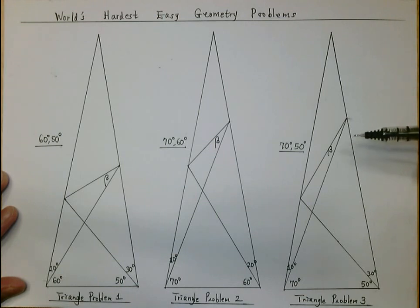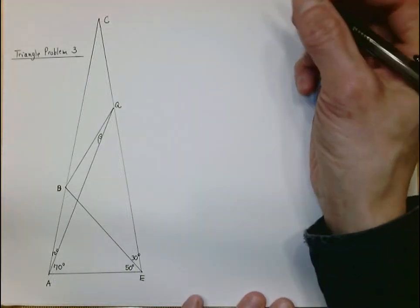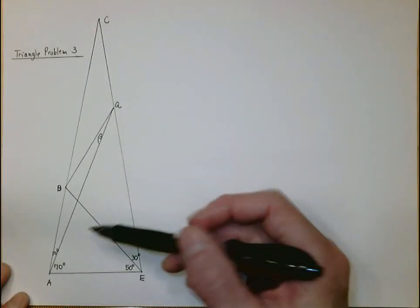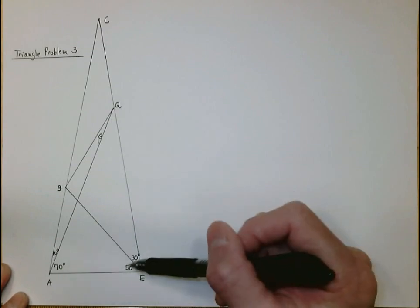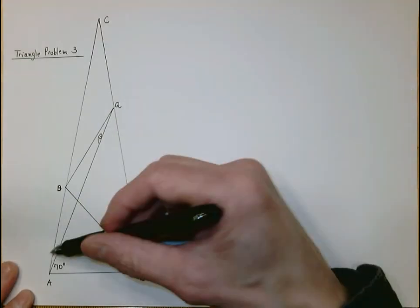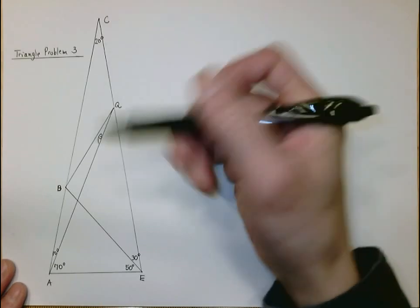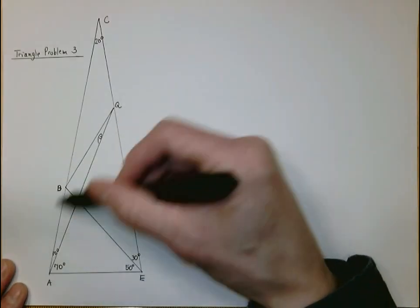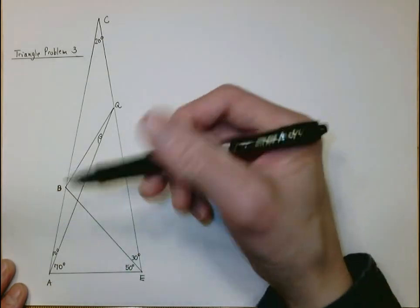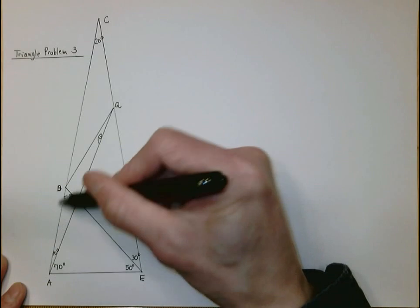The solution of triangle problem number three is based on the construction of problems number one and two. Here is triangle problem number three: there is 70 degrees, there is 50 degrees, and we are looking for the unknown angle beta. We make this angle 80 degrees and then construct a 20-degree angle. Looking at triangle ABE with 50 degrees, this is an isosceles triangle.